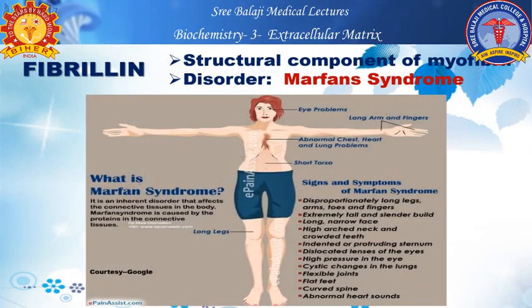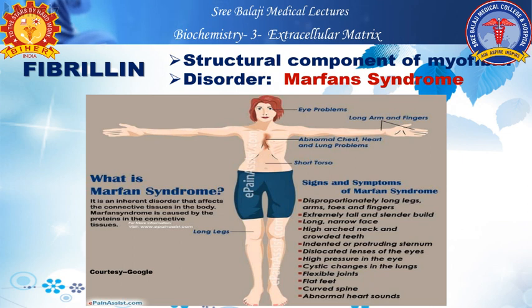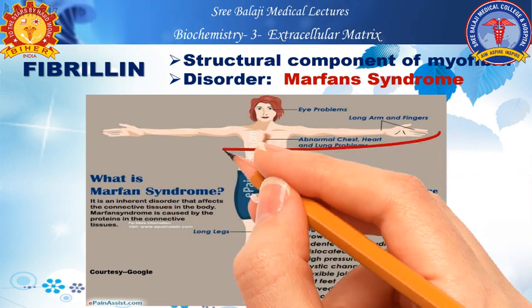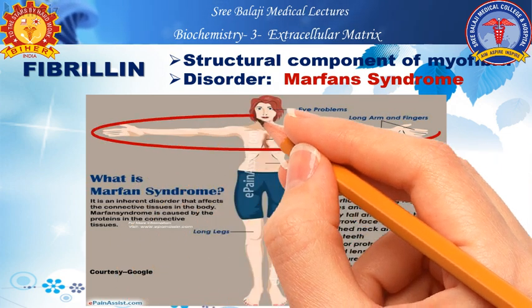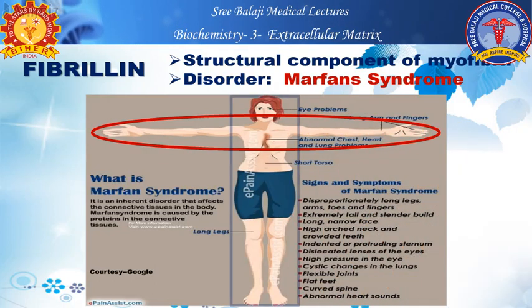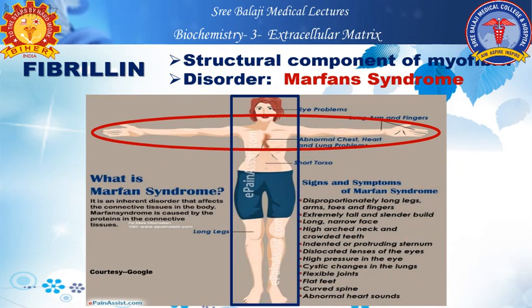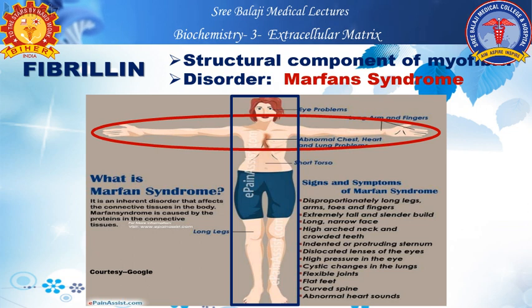Fibrillin is a structural component of the myofibril, and its associated disorder is Marfan's syndrome. In Marfan's syndrome, the arm span length is greater than the height of the person, and it is associated with eye problems like dislocation of the lens and other bone abnormalities.